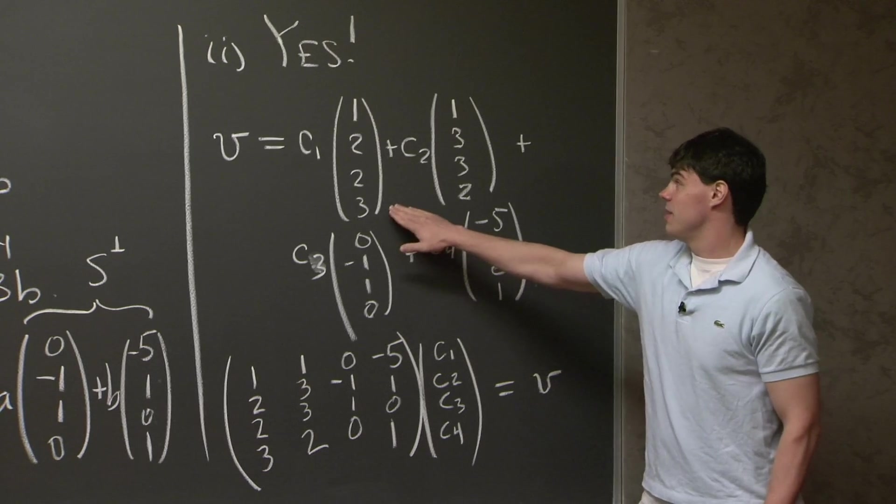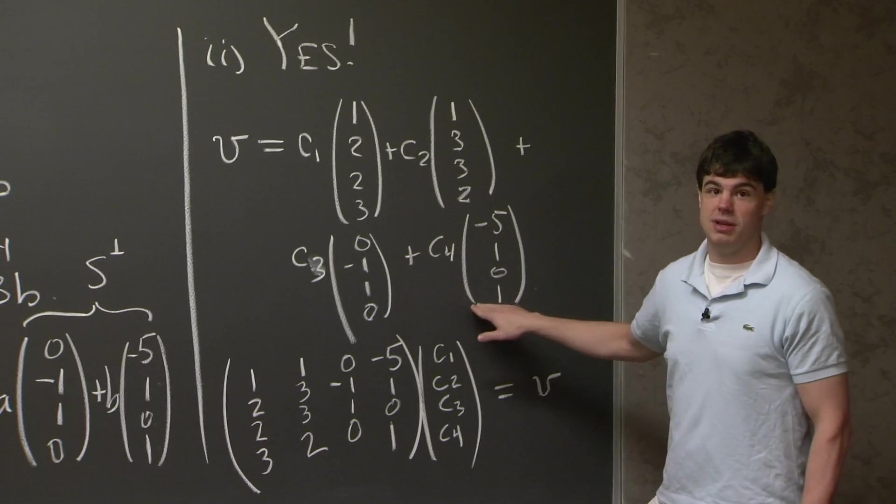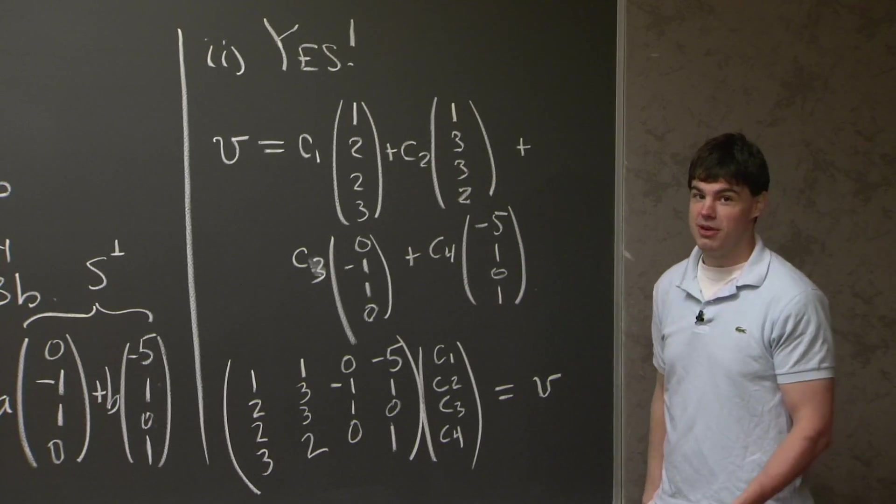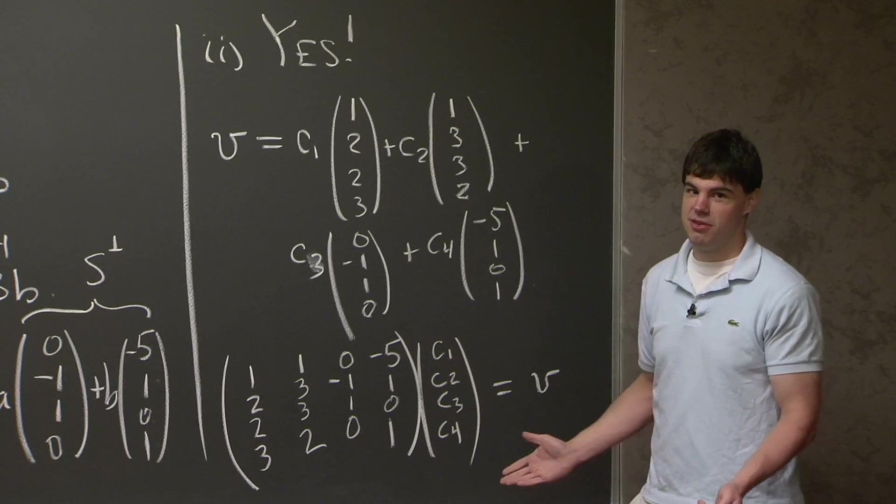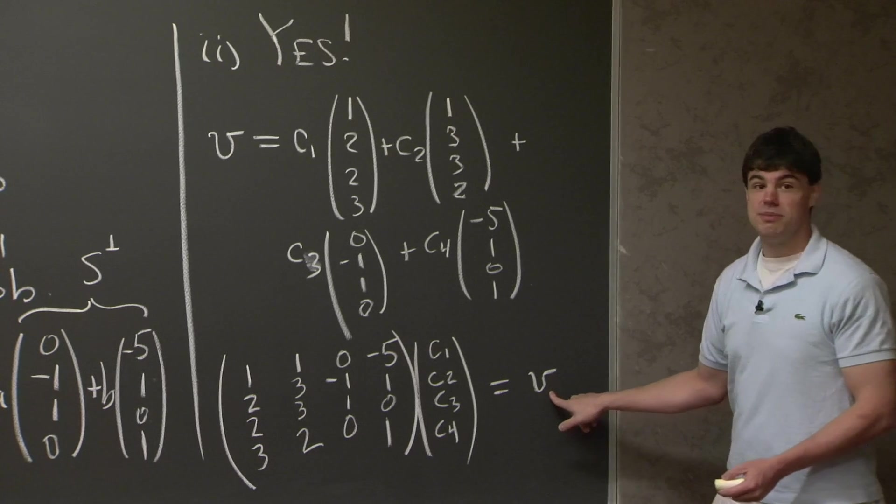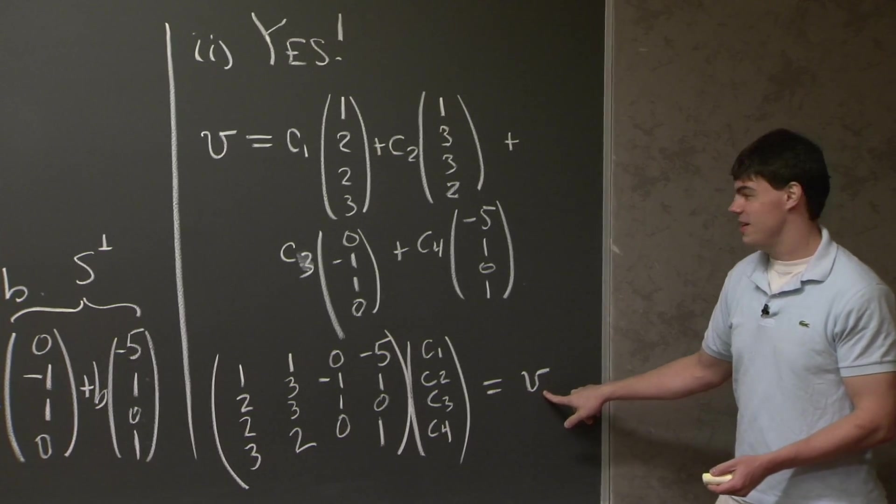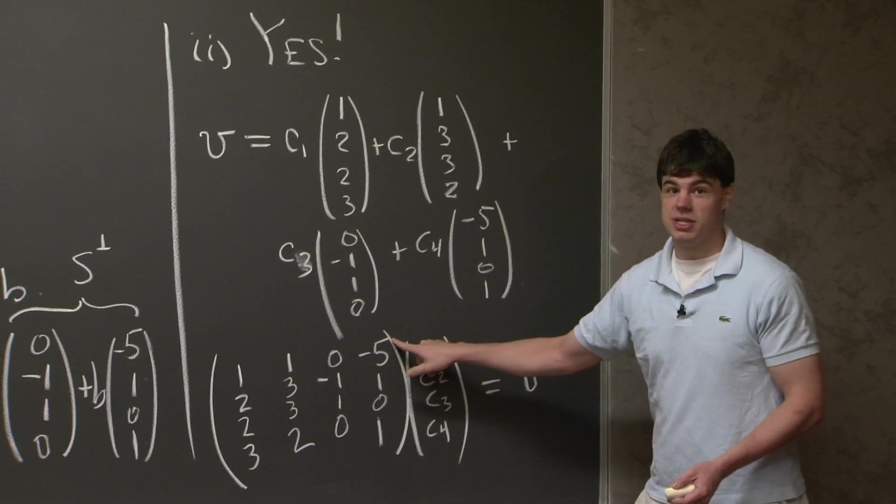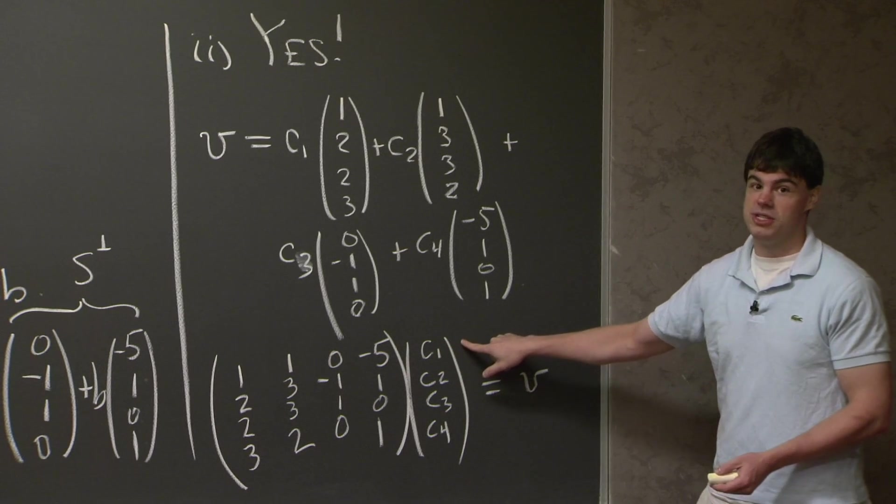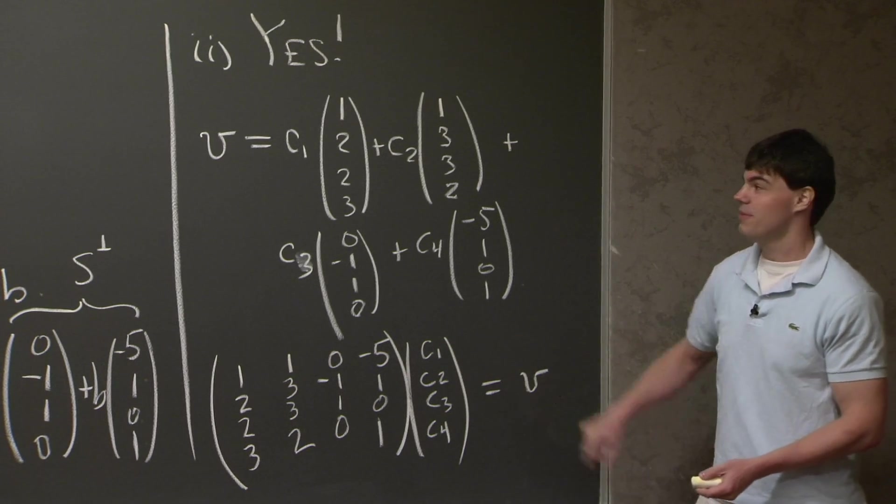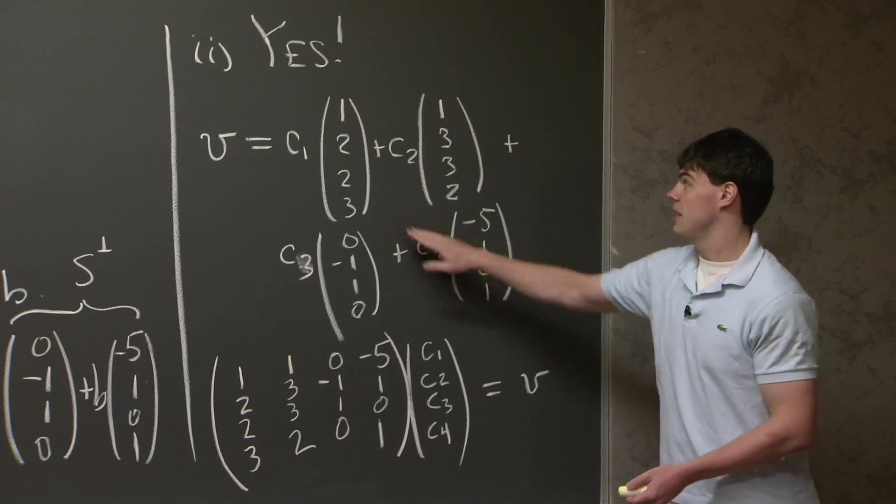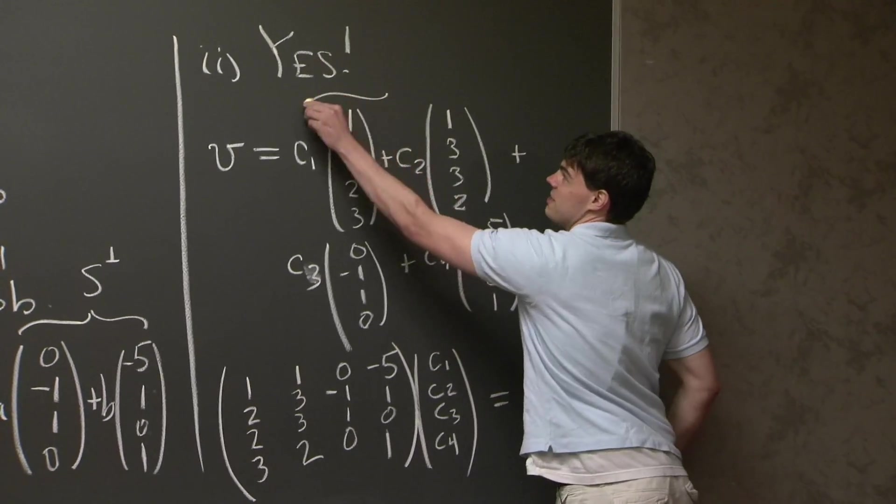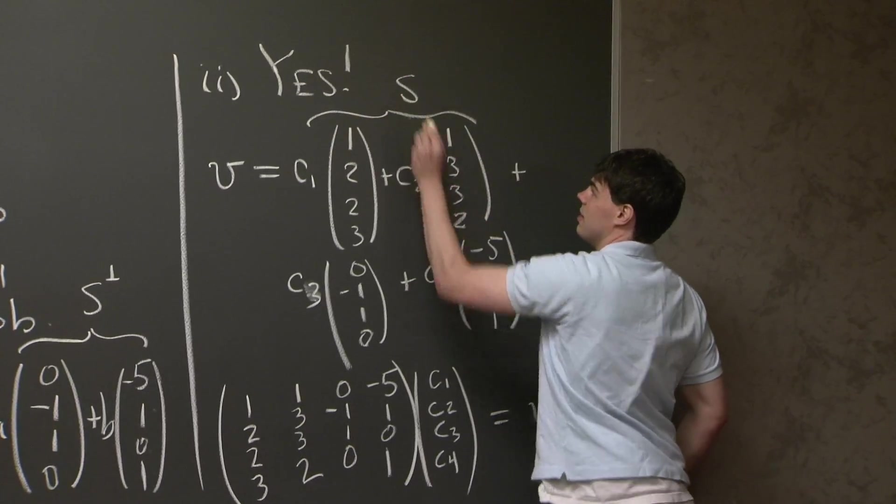Now, by construction, these vectors are linearly independent. And we know from linear algebra that if we have a matrix with linearly independent columns, the matrix is invertible. What this means is for any v on the right-hand side, we can invert this matrix and obtain unique coefficients c1, c2, c3, c4.